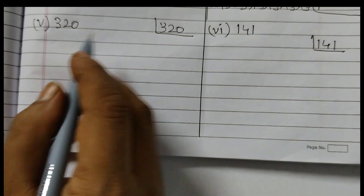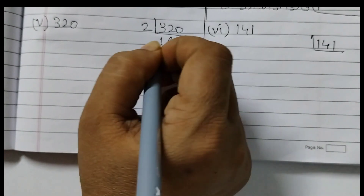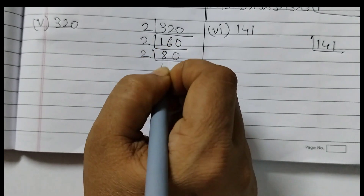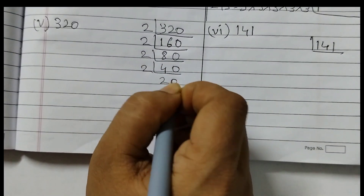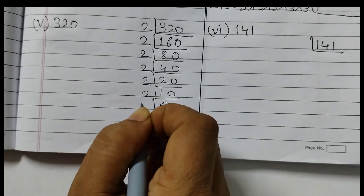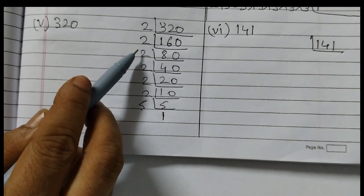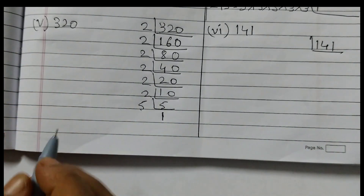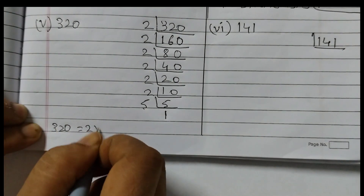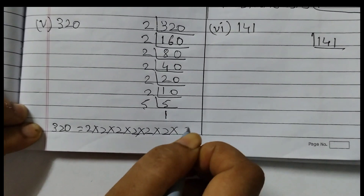Next we have 320. We will divide by 2: 320 ÷ 2 = 160, 160 ÷ 2 = 80, 80 ÷ 2 = 40, 40 ÷ 2 = 20, 20 ÷ 2 = 10, 10 ÷ 2 = 5. So now count how many 2's — that is 6 twos, and then 5 is there. So 320 is equal to 2 × 2 × 2 × 2 × 2 × 2 × 5.